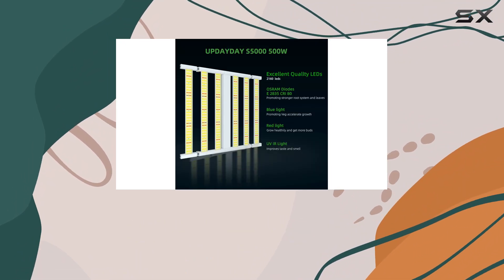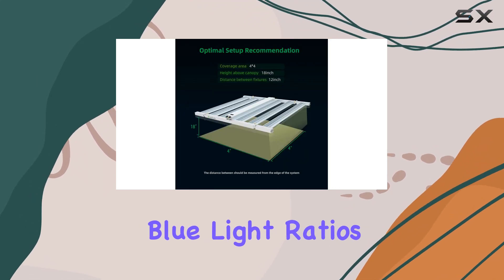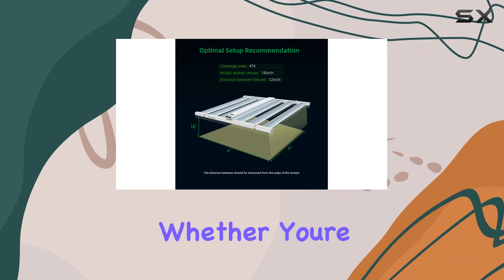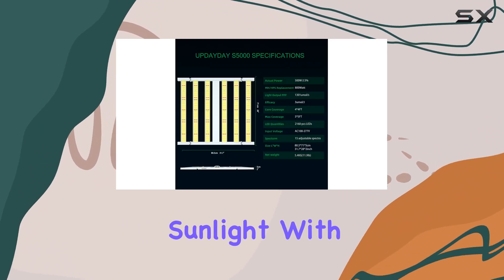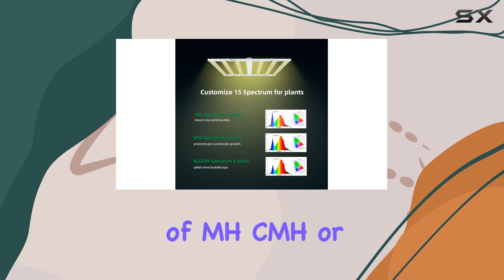Its standout feature is the built-in 15 full spectrum LEDs, which allow growers to adjust the red and blue light ratios based on plant growth stages.